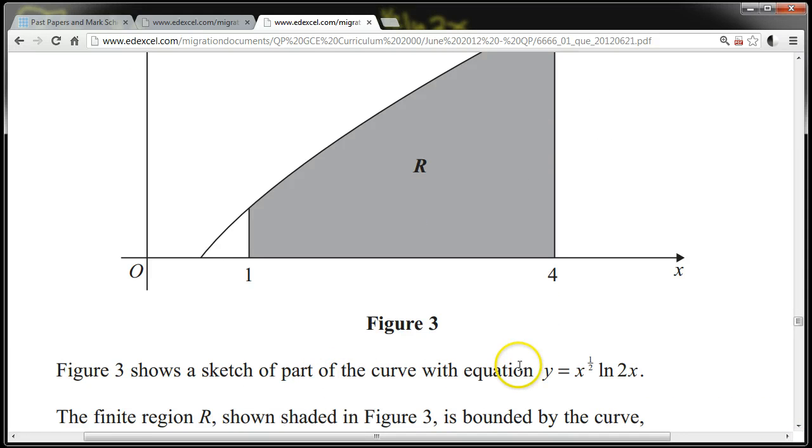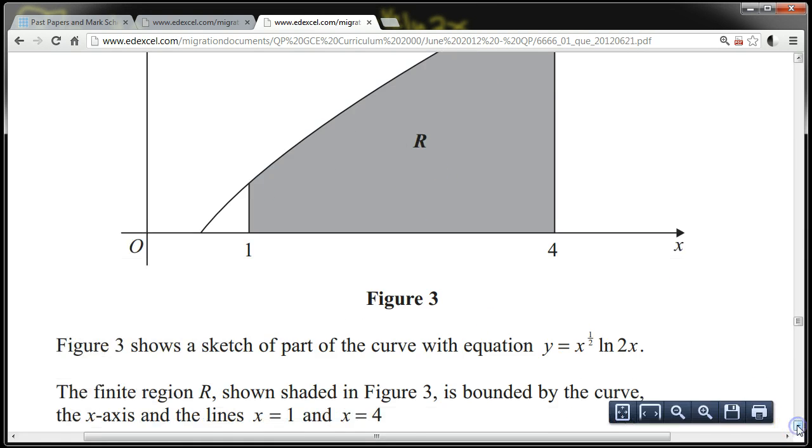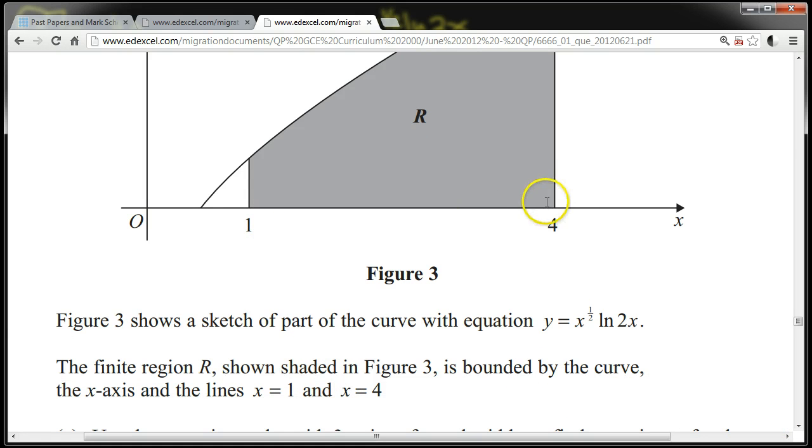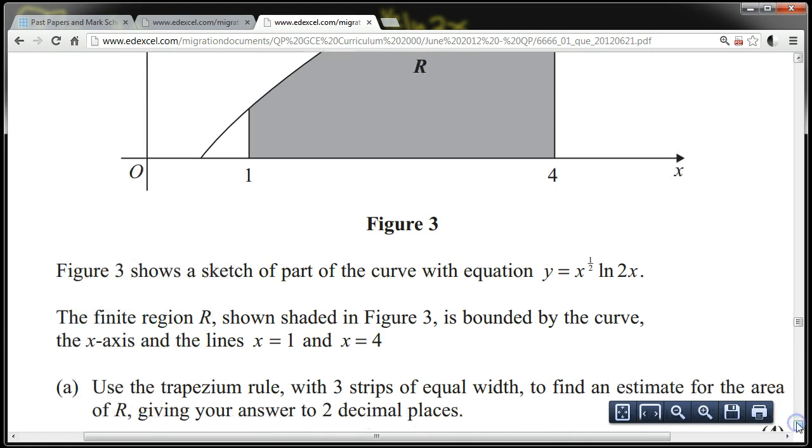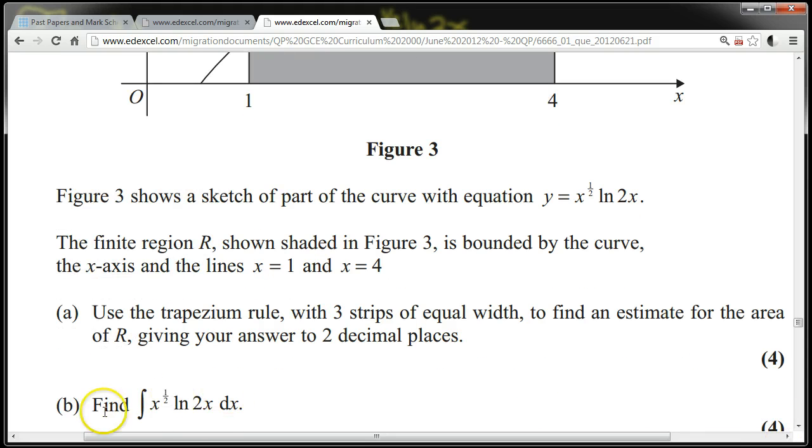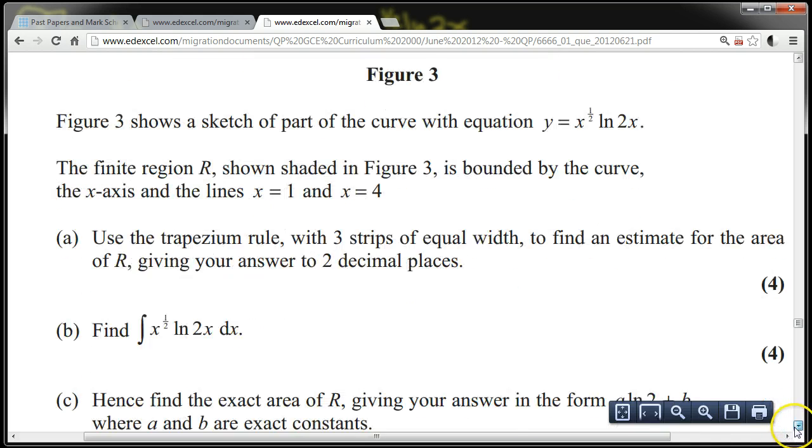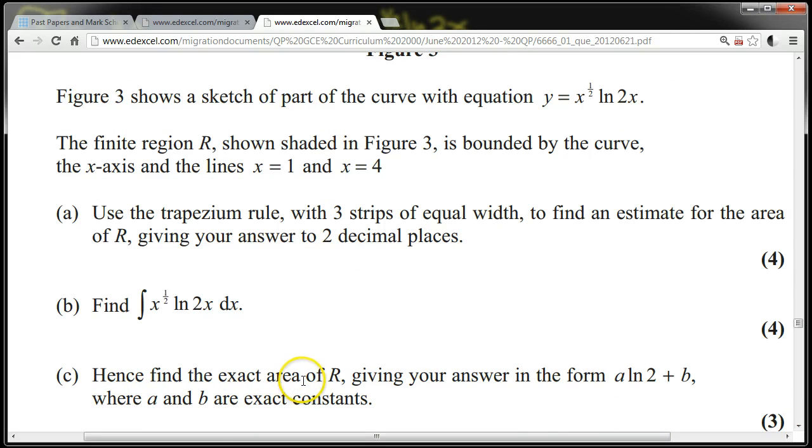Figure 3 shows a sketch of part of the region y equals x to the half ln 2x. The finite region R, shown shaded in figure 3, is bounded by the curve, the x-axis and the lines x equals 1 and x equals 4. Use the trapezium rule with three strips of equal width to find an estimate for the area of R, giving your answer to two decimal places. Find the integral of x to the half ln of 2x dx. Hence, find the exact area of R, giving your answer in the form a ln 2 plus b, where a and b are exact constants.